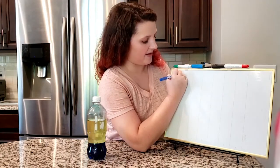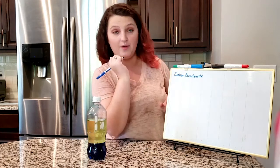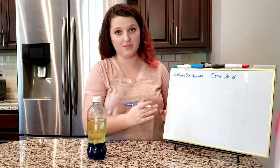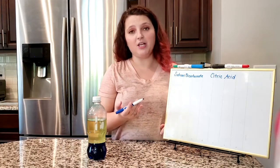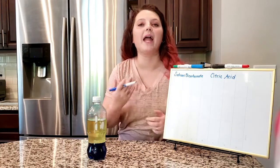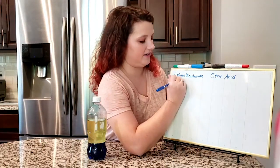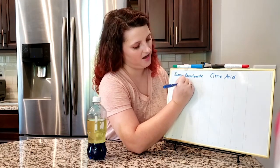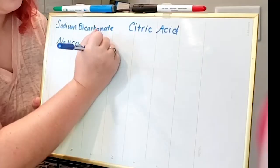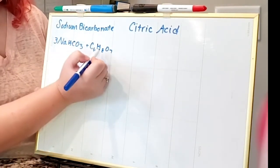So sodium bicarbonate is our base in this reaction, and citric acid is the acid that we used. So when you combine a base and an acid you get a reaction. I'm going to show you the chemical formula for both of these compounds and then show you what reaction takes place and how their atoms sort of rearrange to create our lava lamp bubbles. Sodium bicarbonate is NaHCO3, and we added that to citric acid which is C6H8O7. In order for our reaction to balance, we're going to need three of these molecules for every one of these molecules.